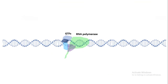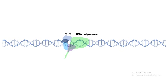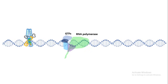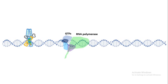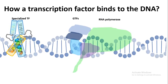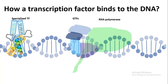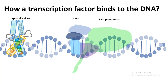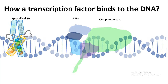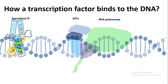We know that in order for transcription to start, we need the minimal requirement of general transcription factors and RNA polymerase. Apart from general transcription factors, there are other transcription factors known as specialized transcription factors, which bind to specific regions on the DNA and recruit activators or repressors, thereby regulating transcription. In this video, we will get an overview of several DNA binding motifs used by transcription factors to bind to the DNA.